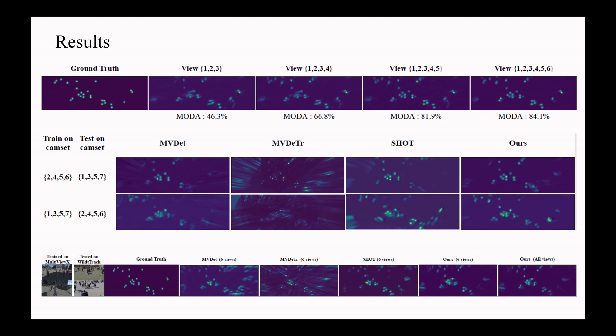The qualitative results show the predicted occupancy maps for the models. First result is the prediction of our model when varying the number of cameras. Second and third results are the predictions of our model as compared to other models for changing camera configuration settings and scene generalization settings.